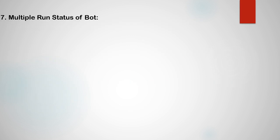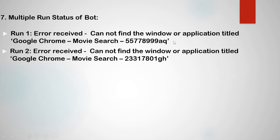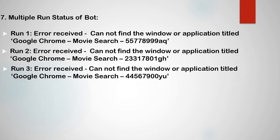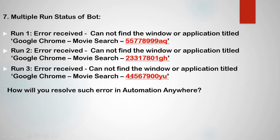In the next question, multiple run statuses of a bot are provided. In run one, the error is: 'cannot find the window or application title — Google Chrome movie search — [alphanumeric value]'. In run two, the same error with a different alphanumeric value. In run three as well, the same error with another alphanumeric value. If you notice carefully, everything is the same in the error except this alphanumeric value is changing — meaning the title of the Google Chrome movie search window is dynamic in nature.